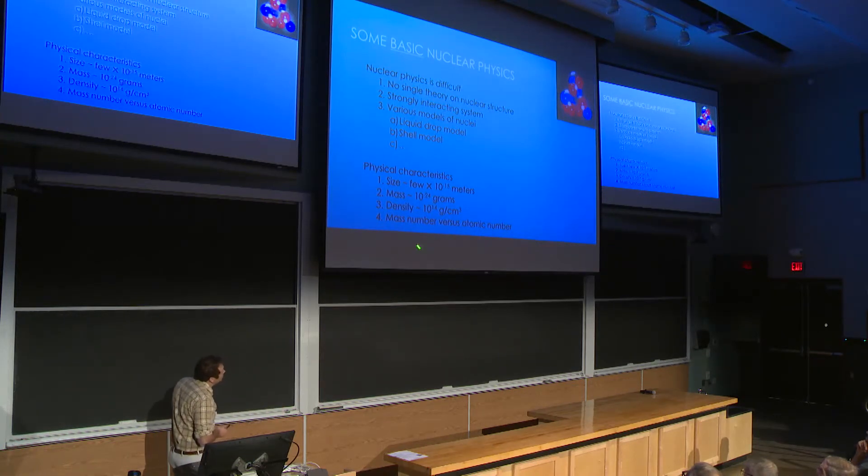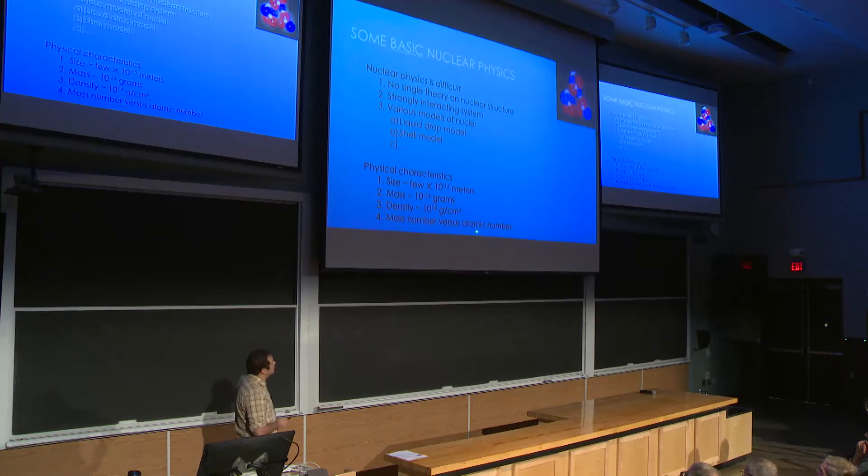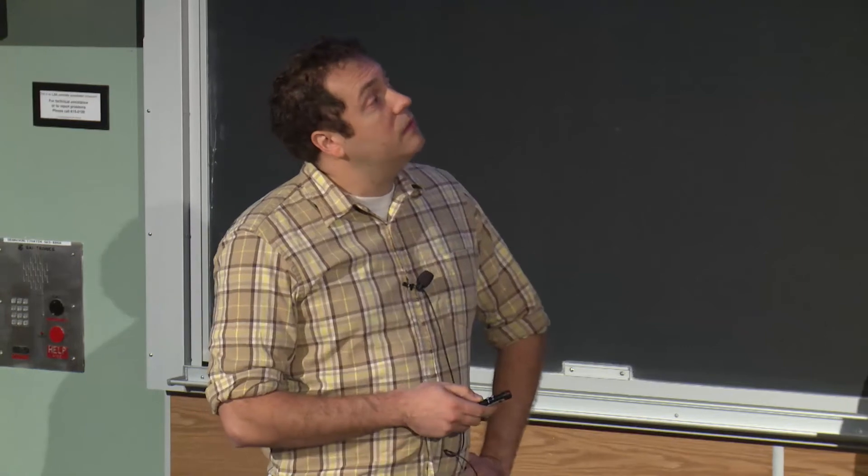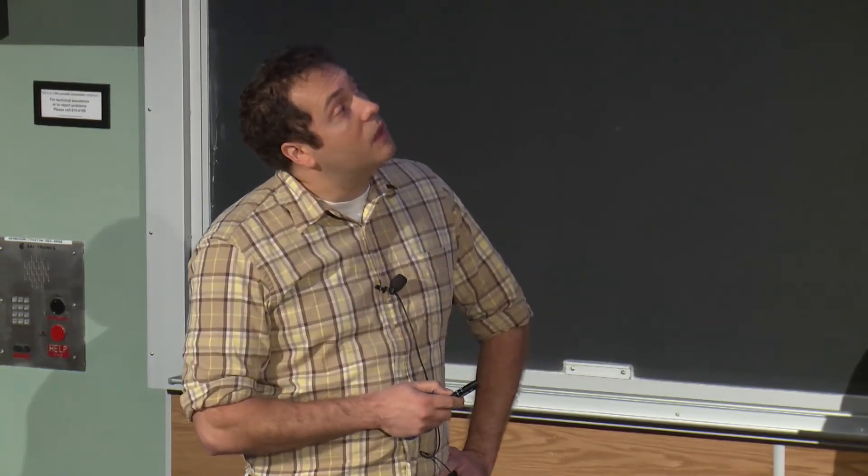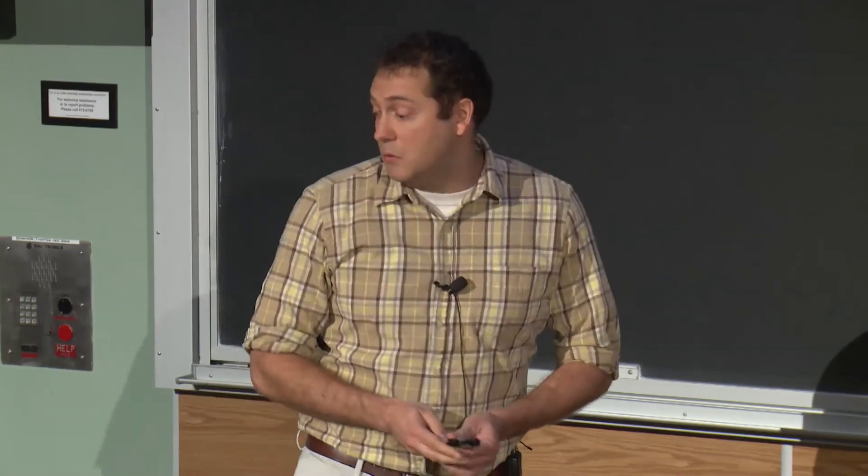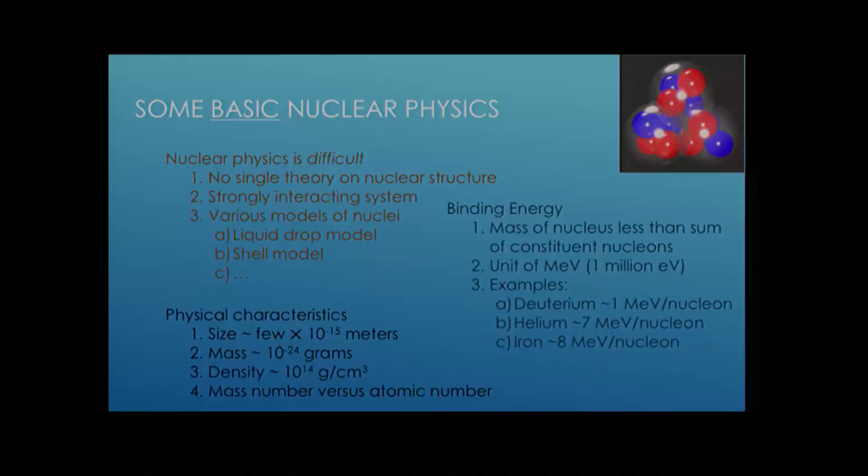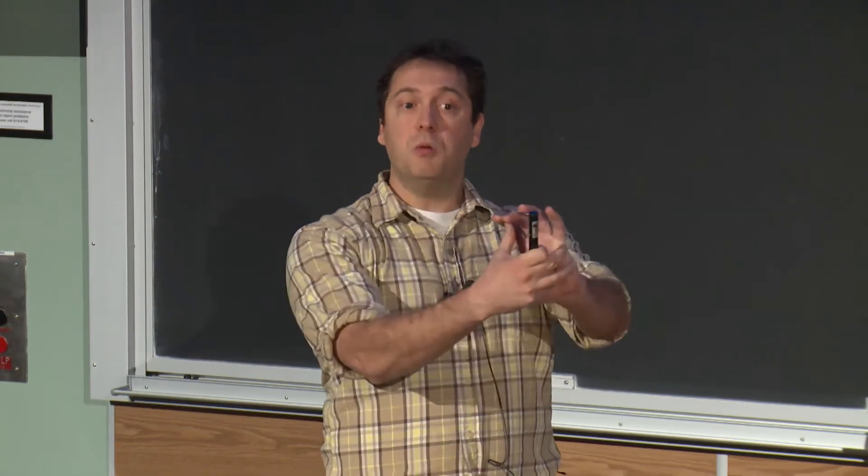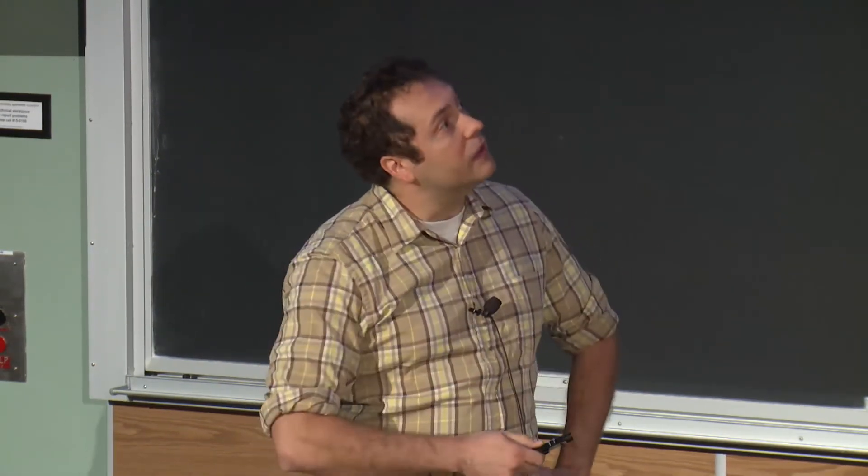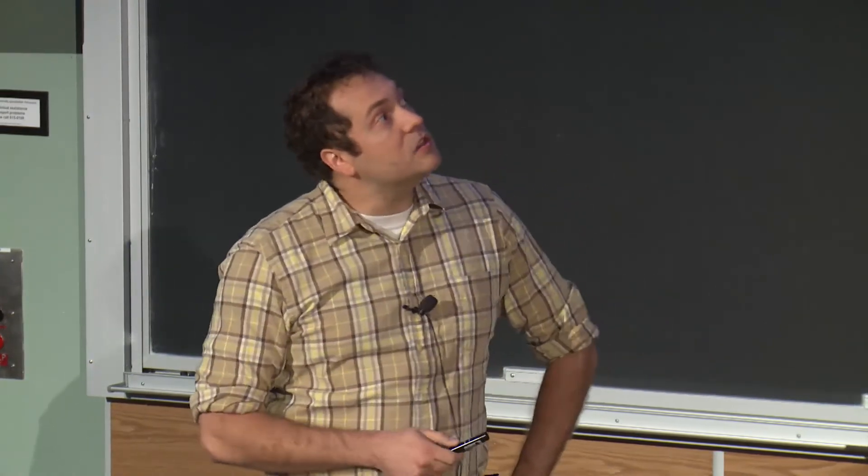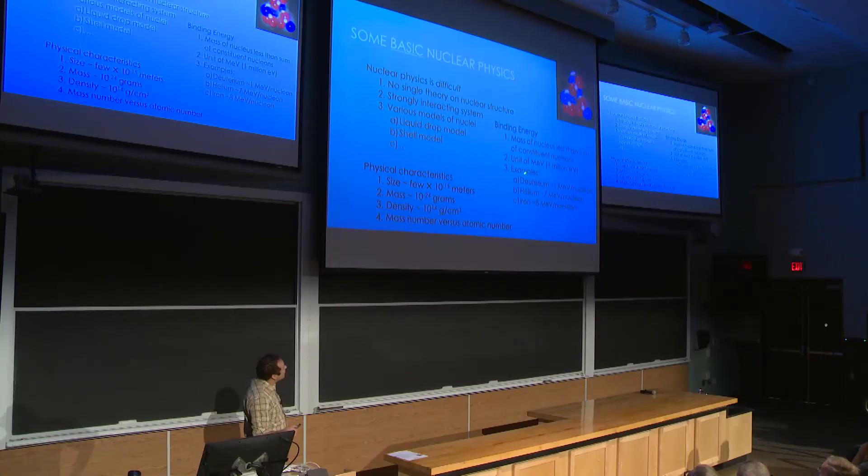The physical characteristics: the size of a nucleus is pretty small, about 10 to the minus 15 meters. Mass is also small, 10 to the minus 24 grams. But when you look at these two and you calculate a density, you get a very large density here. So nuclear matter, 10 to the 14 grams per cubic centimeter. I think most people know water is one gram per cubic centimeter. So this isn't something that you see in a normal environment.